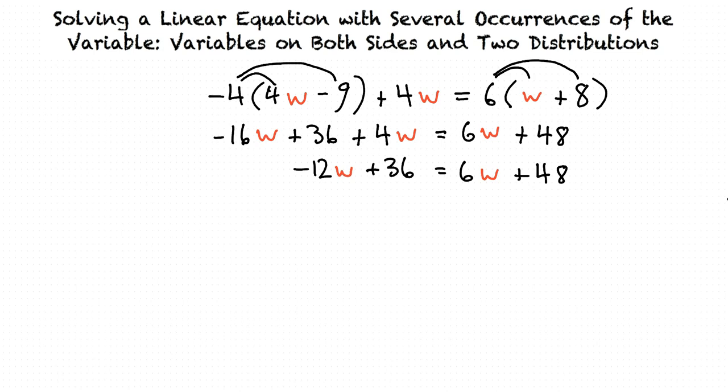After doing so, the result is negative 18w equals 12.